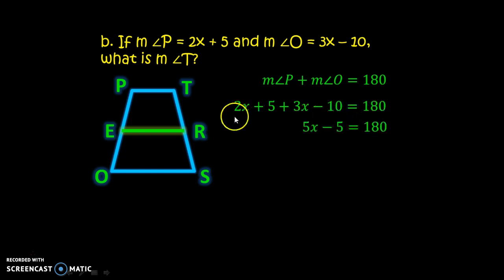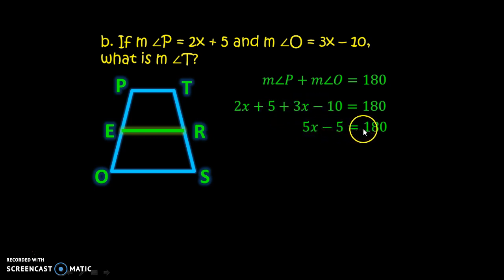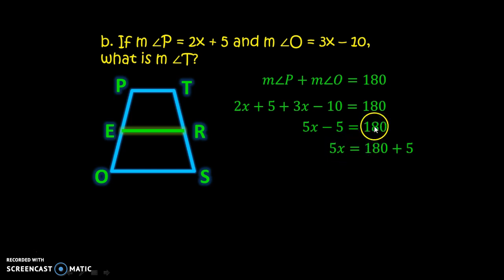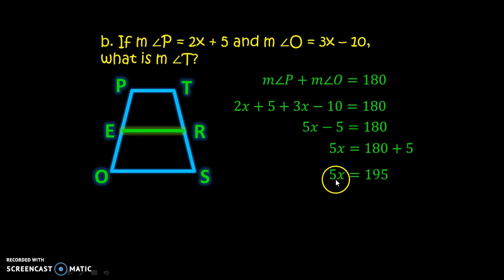Setting up the equation: 2x plus 5 plus 3x minus 10 equals 180. Simplifying: 5x minus 5 equals 180. By algebraic manipulation, 5x equals 185, so x equals 37.